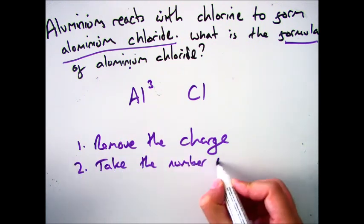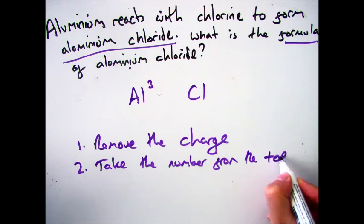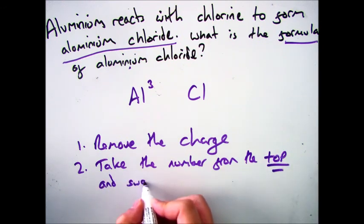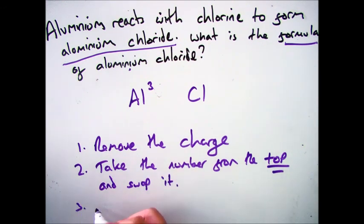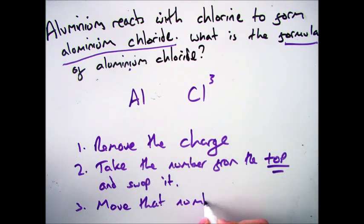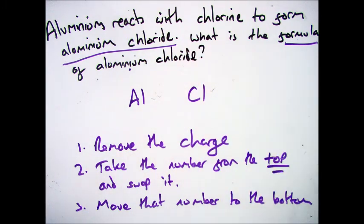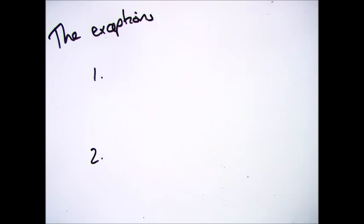So rub out the plus and the minus on either side. Number two, take the number at the top. Remember it's got to be at the top. And swap it around. So move it onto the other side. And then move that number down below, move it subscript. And that's it. That shows you you've got the formula.